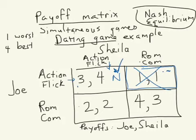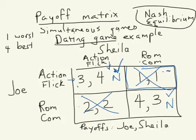That same reasoning disqualifies the remaining off-diagonal cell. However, this game does feature two Nash equilibria — if they both go to the rom-com, neither has an incentive to change their action. Realize that games might have zero Nash equilibria, or they might have two. There isn't just one Nash equilibrium to every game, although we'll talk about the Prisoner's Dilemma, where there is just one.